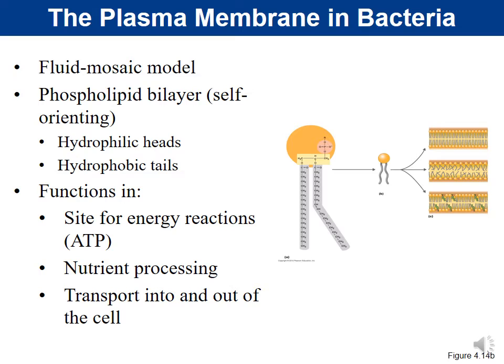In addition, we get nutrient processing — the membrane is selectively permeable, regulating what goes into and out of the cell. The membrane is used to transport things like glucose into and out of the cell and allows the bacteria to process nutrients. Prokaryotic cells typically lack sterols or cholesterol in the membrane that eukaryotic cells have.